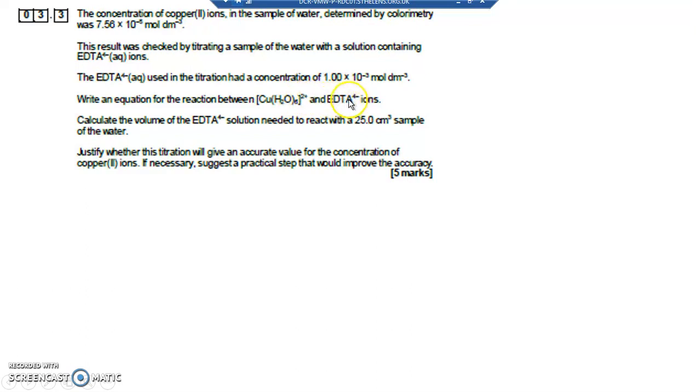Well we know that an EDTA 4 minus ion actually has 6 different ligands. So we've got 6 waters, each with 1 dative bond, but this EDTA produces 6 dative bonds. So that EDTA can replace all of those 6 waters. So it'll look like that.